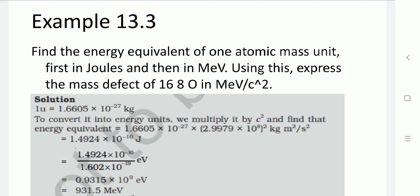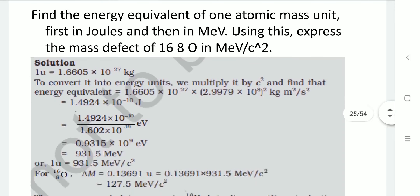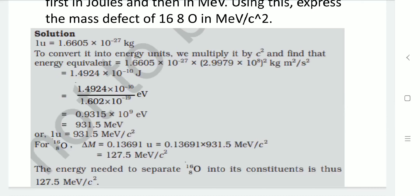To convert to electronvolts, divide by 1.6 × 10⁻¹⁹, giving 0.9315 × 10⁹ electronvolts, which equals 931.5 megaelectrovolts. So one atomic mass unit equals 931.5 MeV/c². The mass defect of oxygen, calculated earlier as 0.13691 atomic units, needs to be converted to MeV/c².